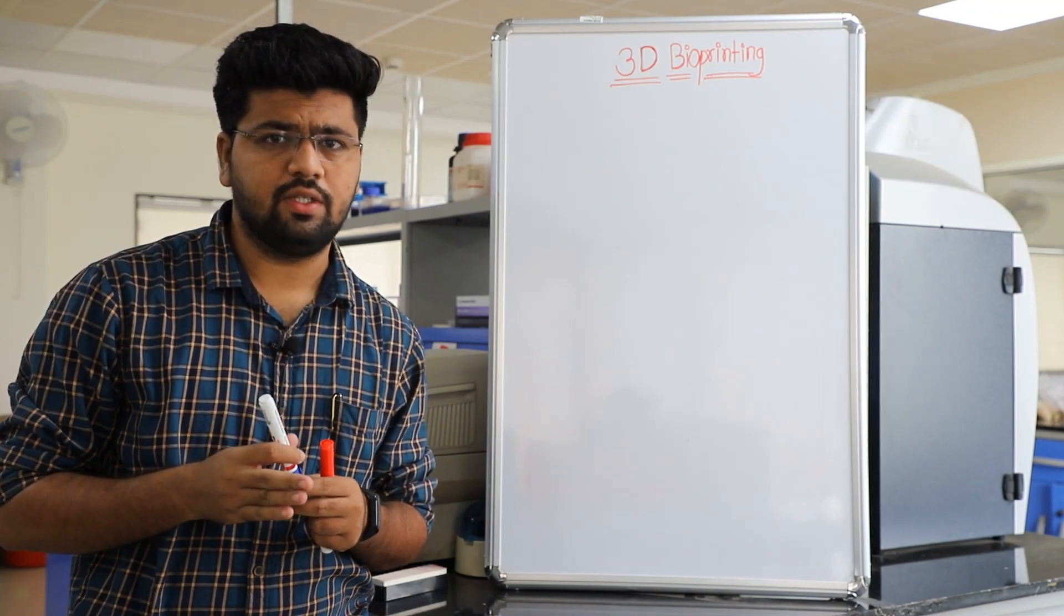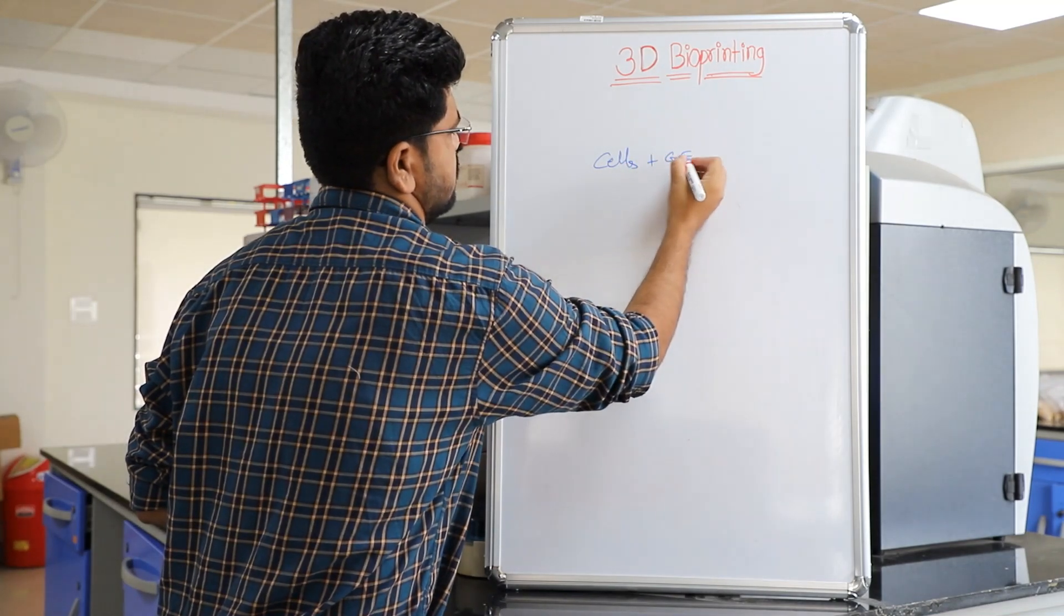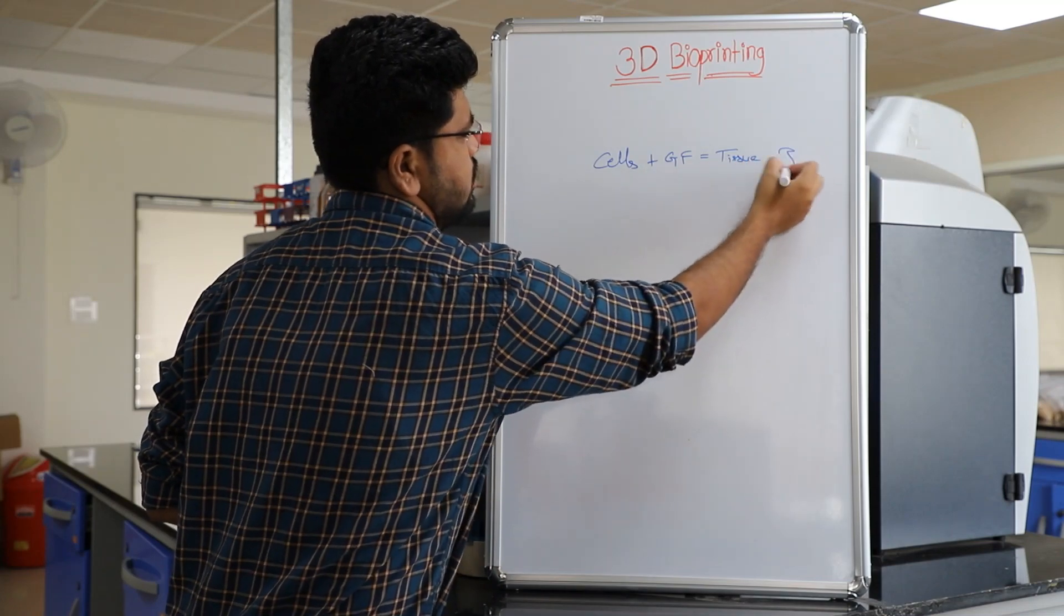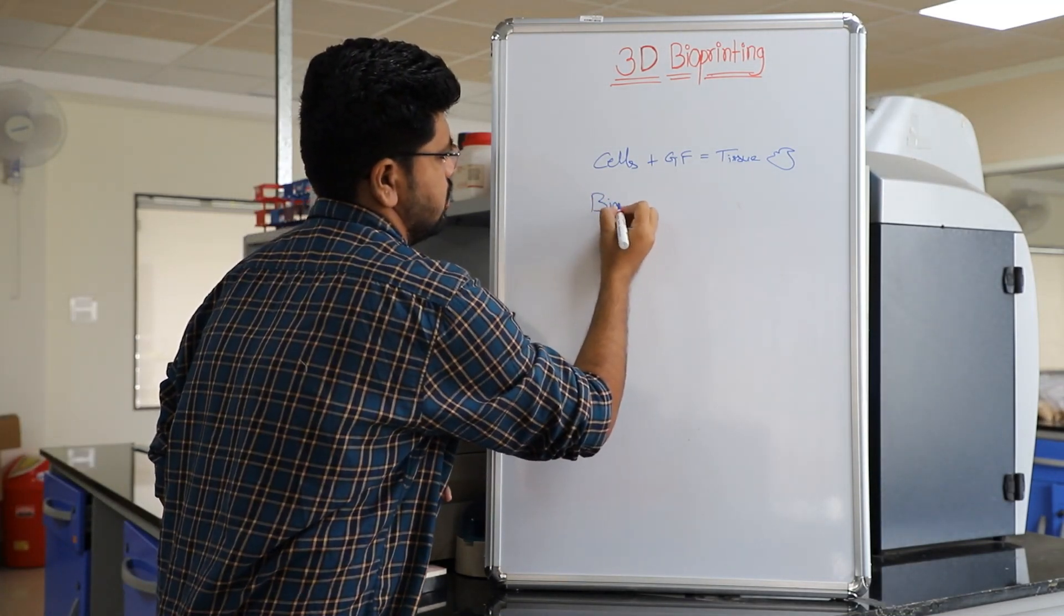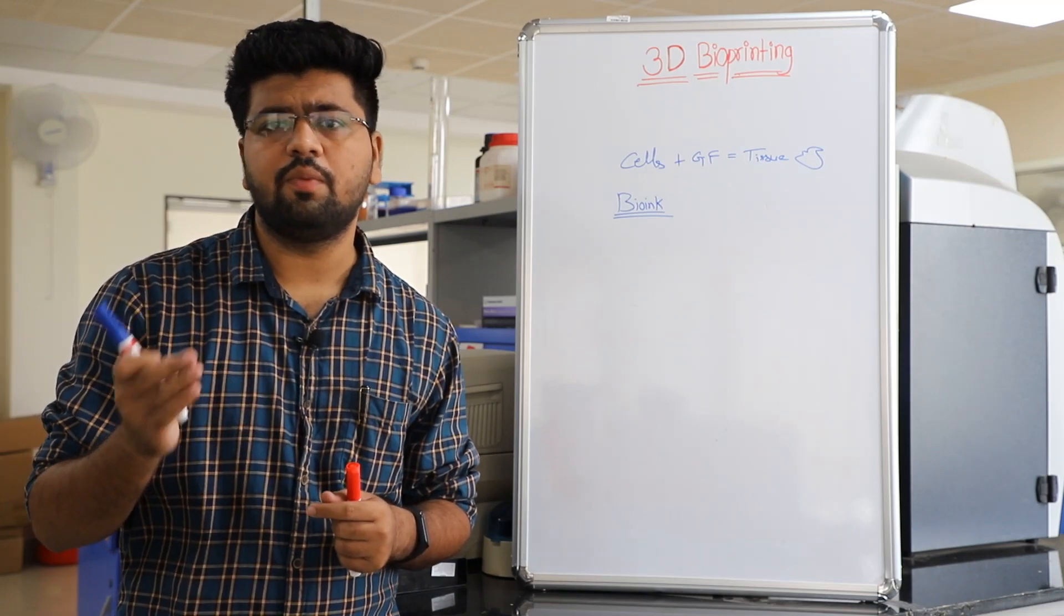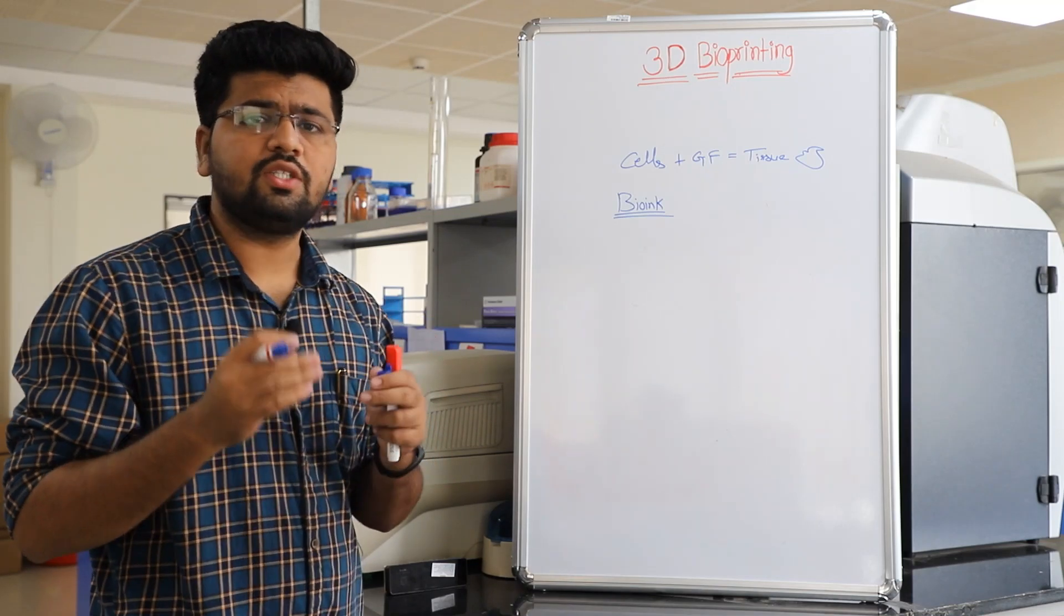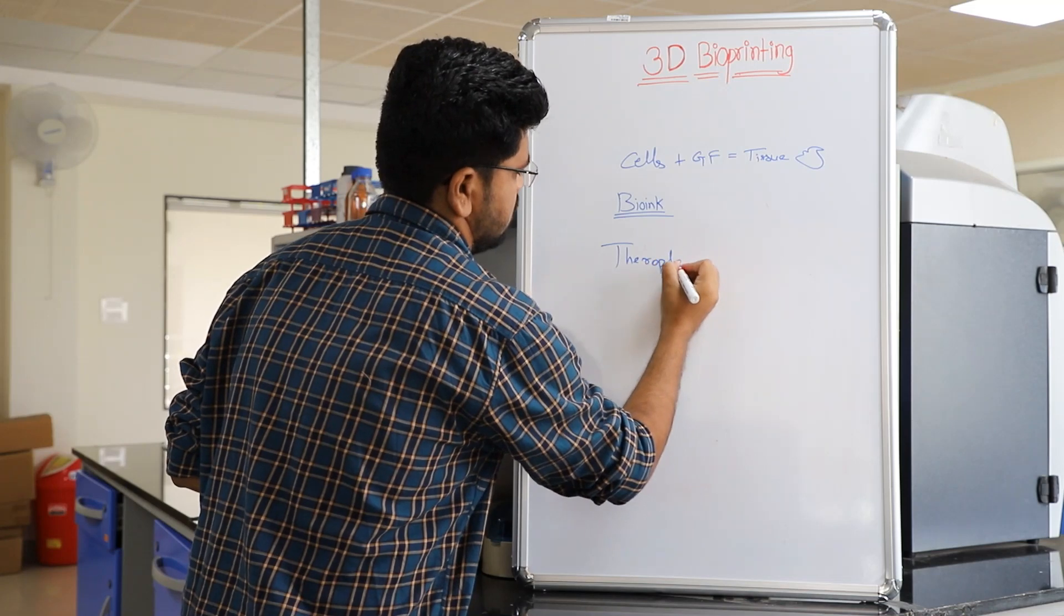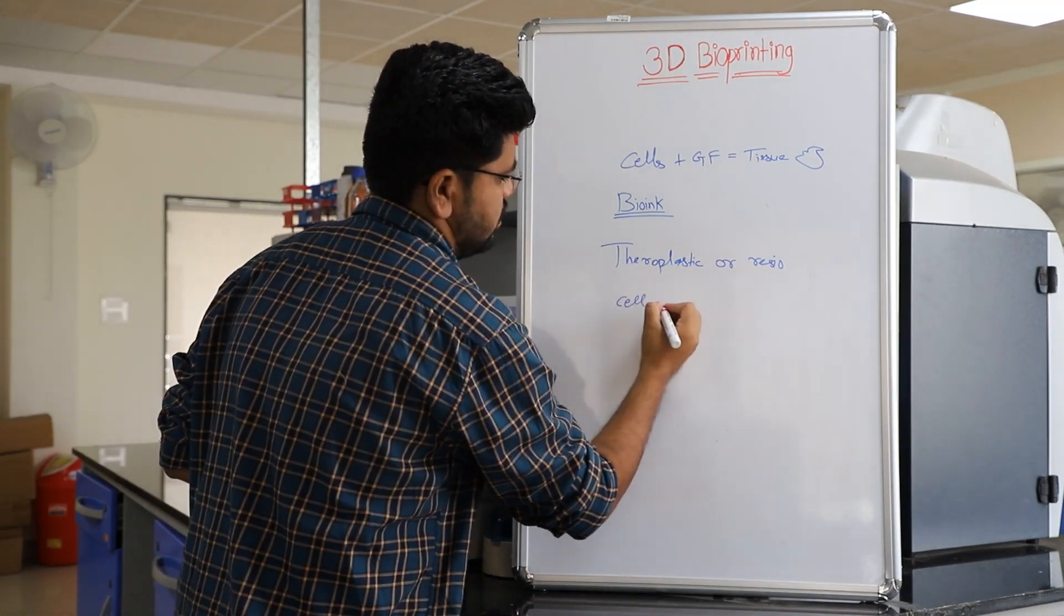3D bioprinting is a process of manufacturing where cells plus growth factors, these biomaterials are combined to create tissue-like structures similar to natural tissues. It uses a material known as bioink. It works in a similar way as conventional 3D printing but here a digital model becomes a physical 3D object. It's just like a drawing on paper comes to life, but instead of thermoplastic or resin, biomaterials are used like cell suspension.